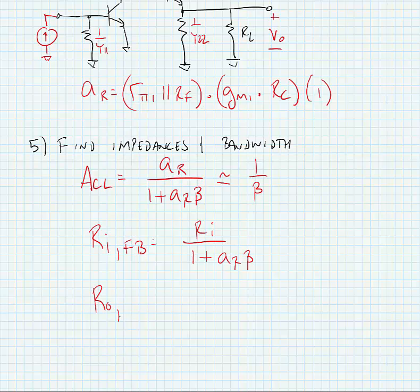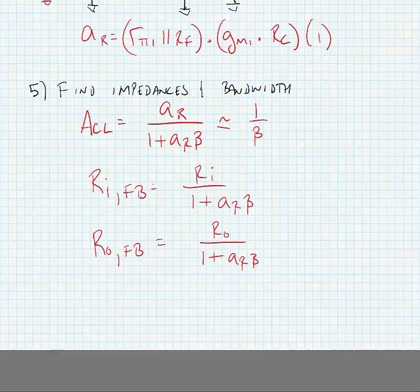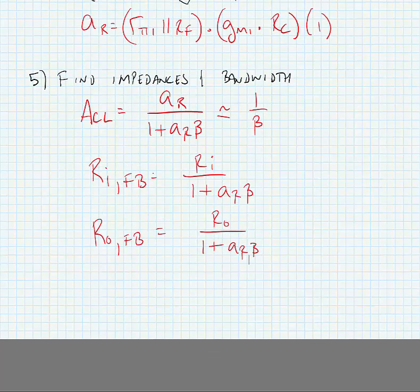The output type of feedback was shunt as well, so this is equal to the output impedance before feedback divided by 1 plus AR times beta.